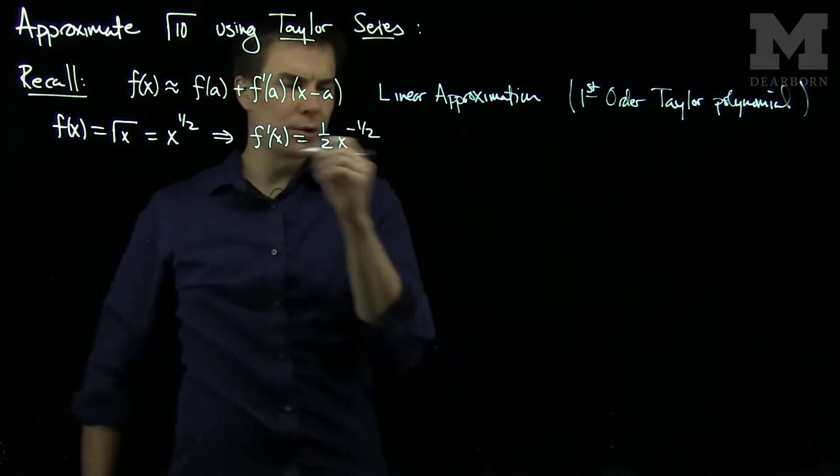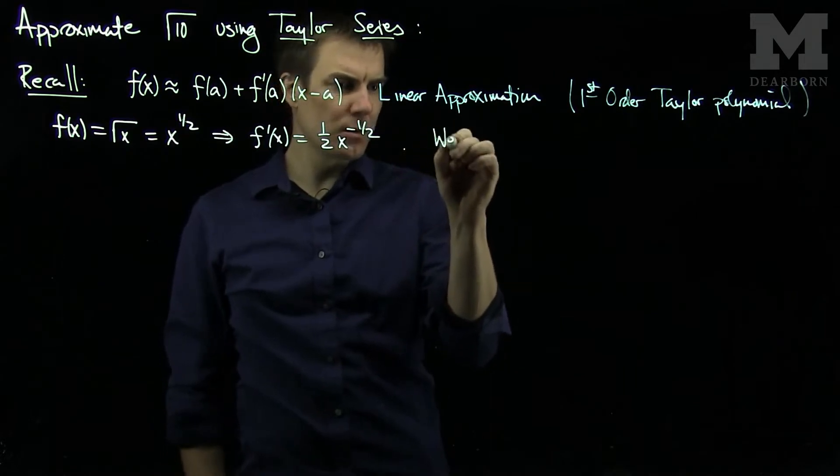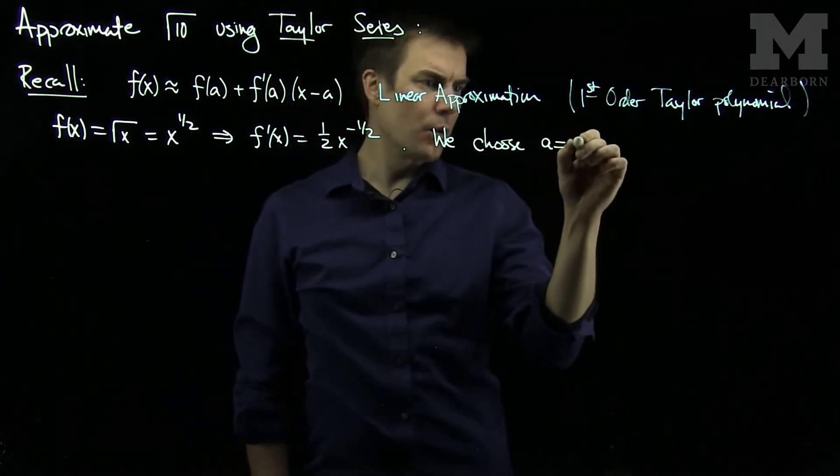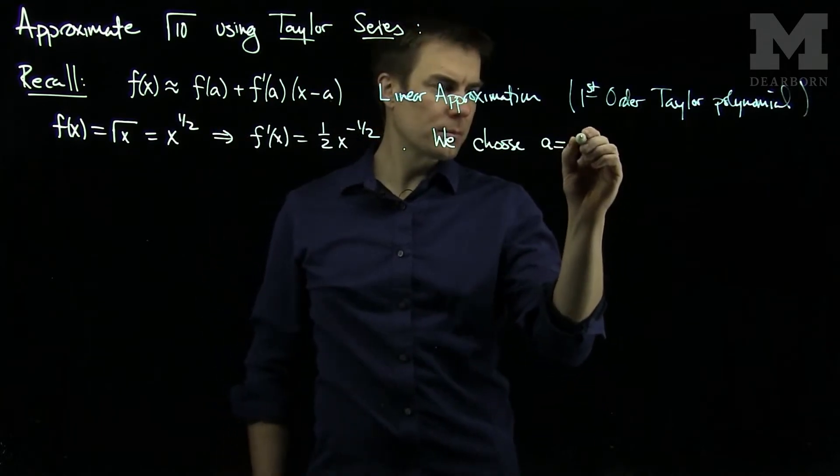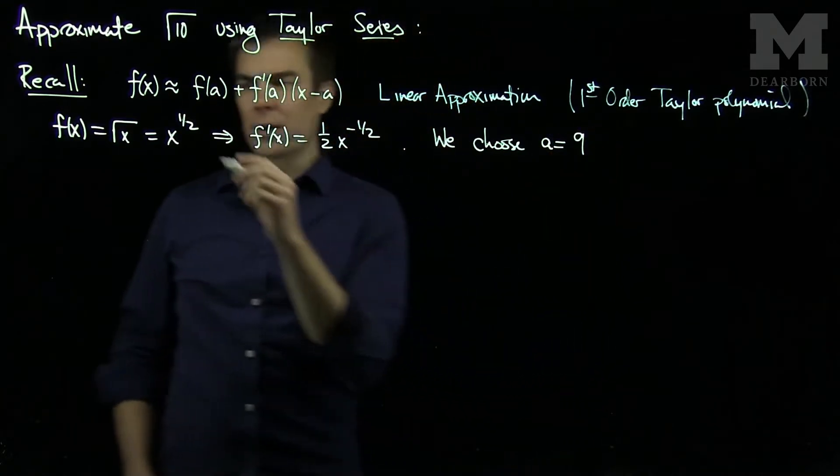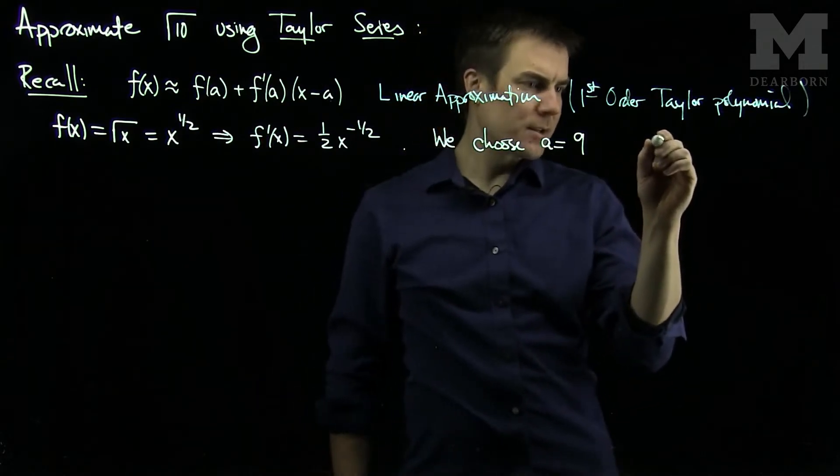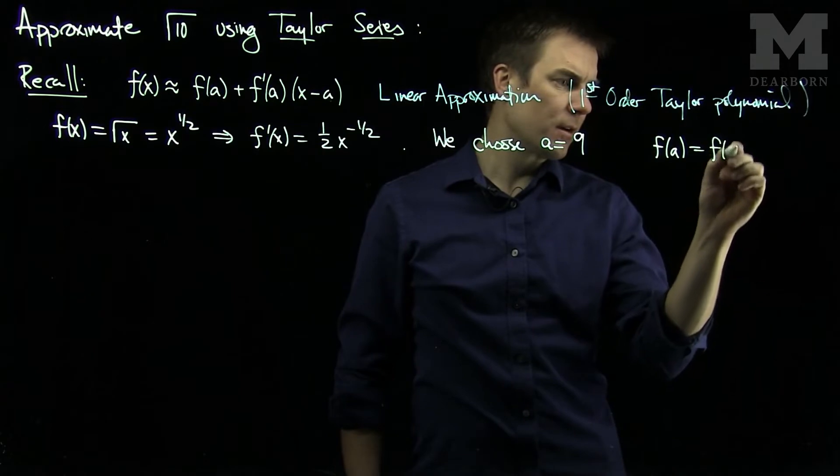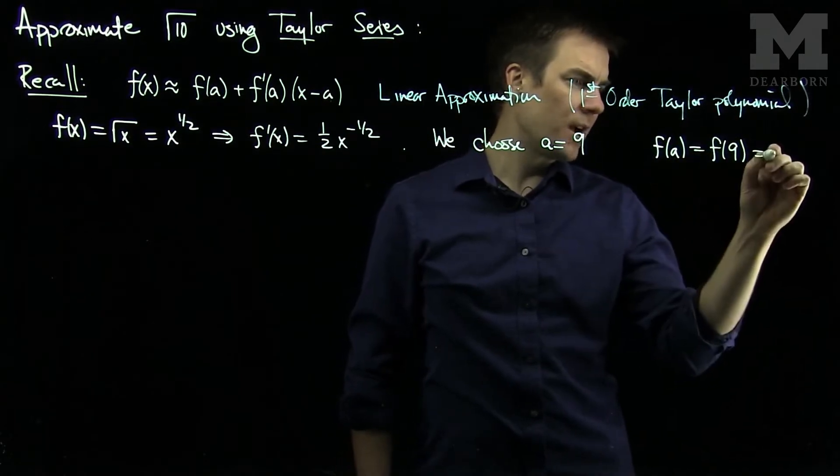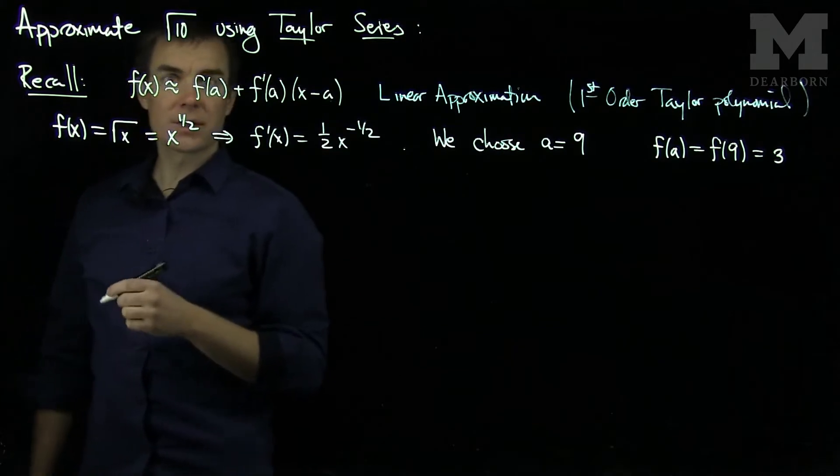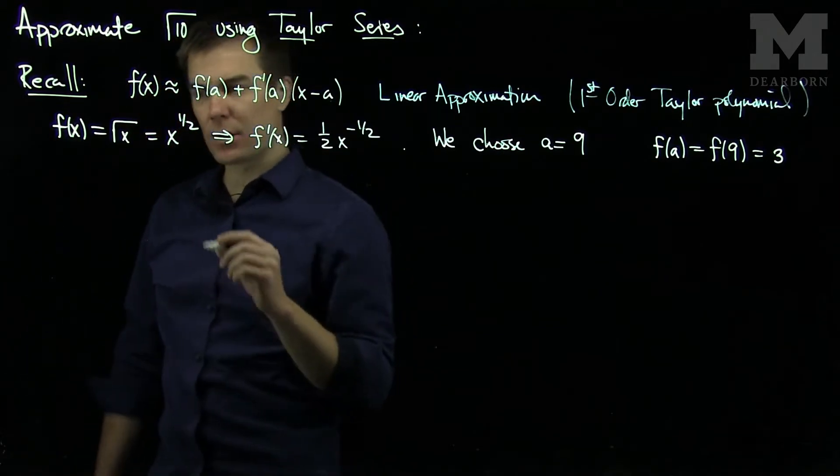And the point a we'll choose here, we'll choose a equals 9, because we want the square root of 9 to be 3. So if a is 9, that's what we'll use. And so note that f(a) is f(9), and the square root of 9 is equal to 3. And we choose a number to center the Taylor series at so that the approximation is easy to do.